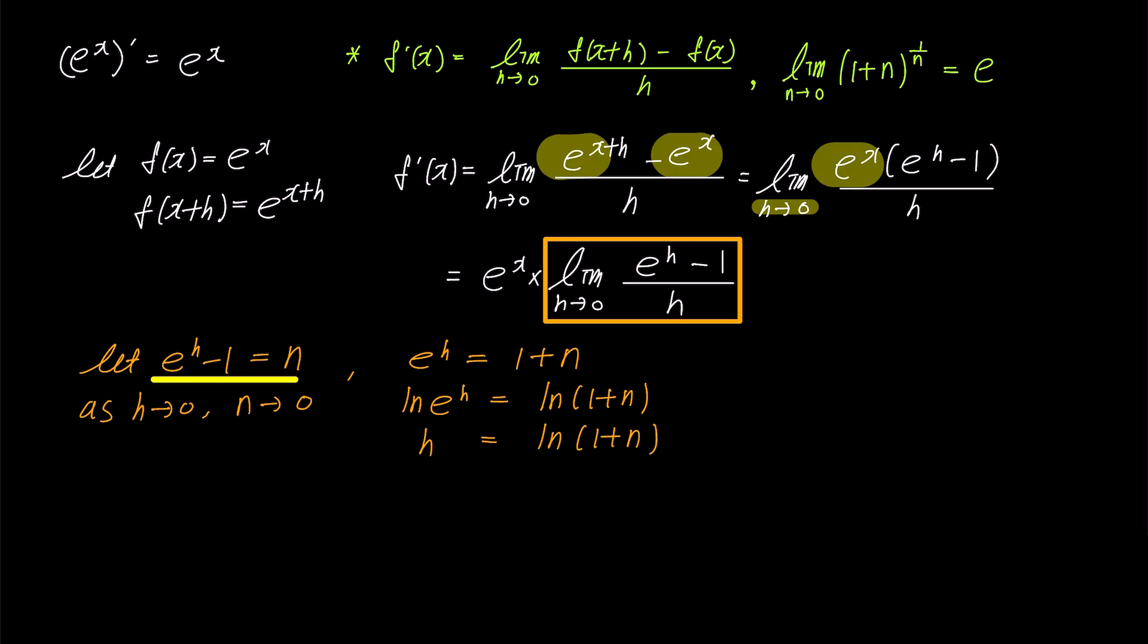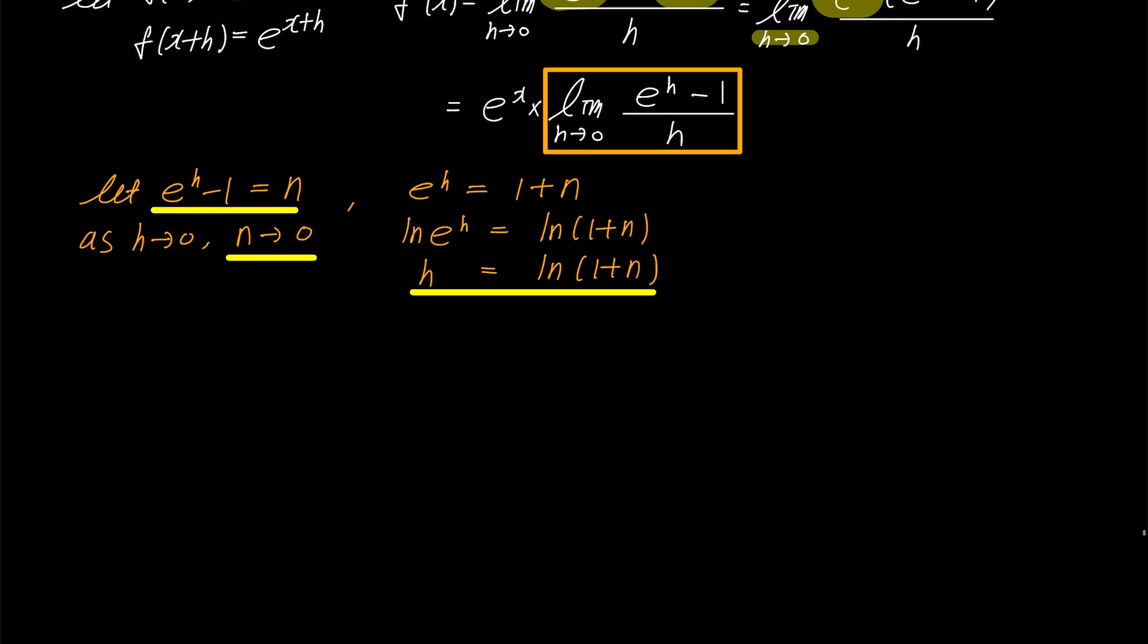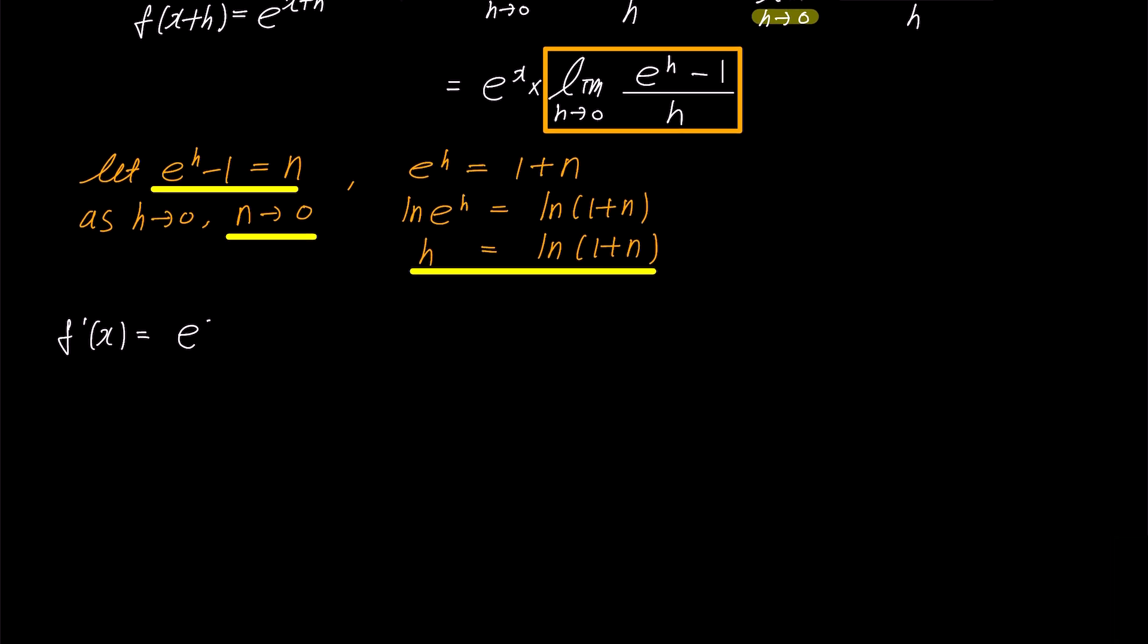Now, let's apply these three substitutions and conditions to the previous limit expression. The derivative f' of x is equal to e to the power of x times the limit expression where the numerator e to the power of h minus 1 is replaced with n, and the denominator h is replaced with ln 1 plus n.